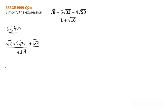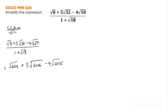So I have here root 8. What number multiplied by a perfect square will give me 8? The nearest perfect square close to 8 is 4. So I can write it as root of 2 times 4, which gives root 8. I maintain the 5. Then for root 32, which perfect square multiplied by a number gives 32? That will be 16, so it is 2 times 16. Then minus the 4. For root 50, that will be 2 times 25. All over 1 plus root 18, and for 18 that will be 9, so it becomes 2 times 9.